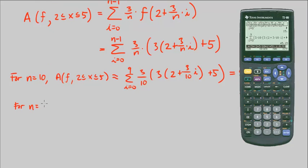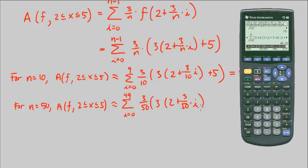That was for n equals 10, so we want at least 4 values of n. For n equals 50, the area is approximately i equals 0 to 49, 3/50 times 3 times (2 + 3/50 × i) + 5. The only thing that's changing here is this, because it has our n, this has the n, and this has the n. Everything else is the same.